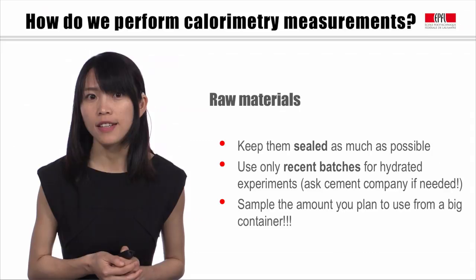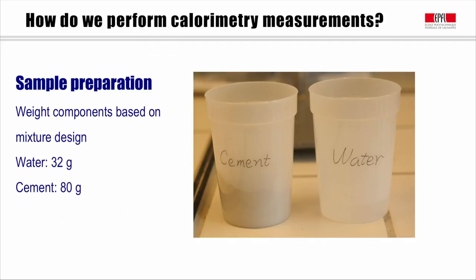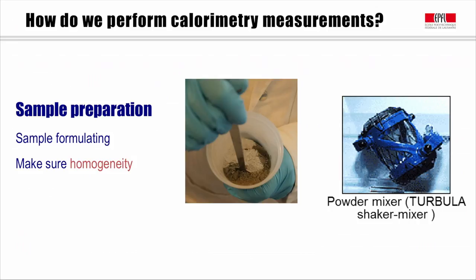In this section, we are going to cast the cement paste with water-to-cement ratio of 0.4. For one ampoule, usually we use approximately 10 grams of cement paste. This amount will be changed with different types of materials. One principle is to have high enough signal in order to lower the error-to-signal ratio. Here, we weighed 32 grams of water and 18 grams of cement powders in a 250 ml plastic container.